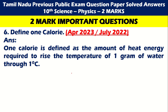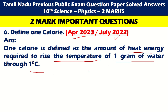Next: Define one calorie. One calorie is defined as the amount of heat energy required to raise the temperature of one gram of water through one degree Celsius. This is regularly asked, so please make note of this question.